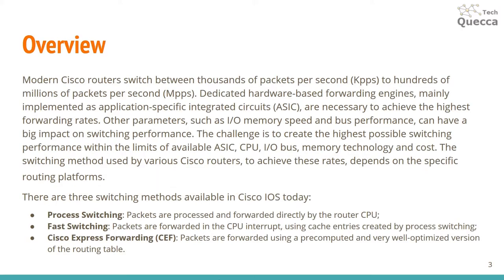Most Cisco routers use Cisco IOS software to perform packet switching functions. When IOS was first developed, only a single switching mechanism existed. This method, known as process switching, was very simple and not very efficient. As network speeds and demands for high performance grew, enhancements were made to Cisco IOS software that provided improved methods of switching. Specialized hardware components were also developed and incorporated into certain routers to improve forwarding performance. Other parameters such as input-output memory speed and bus performance can have a big impact on switching performance.